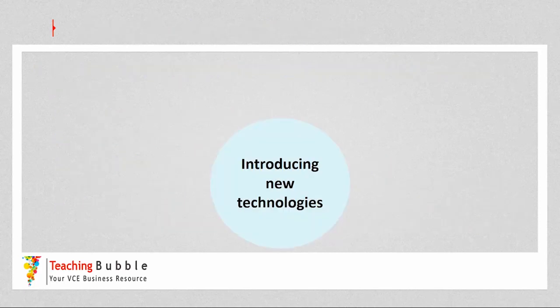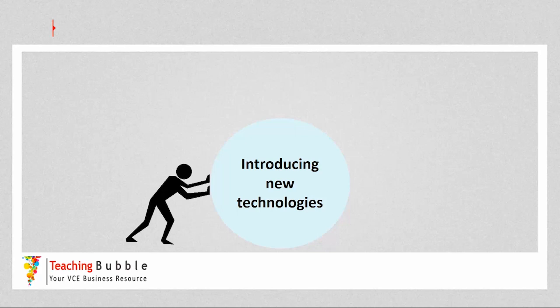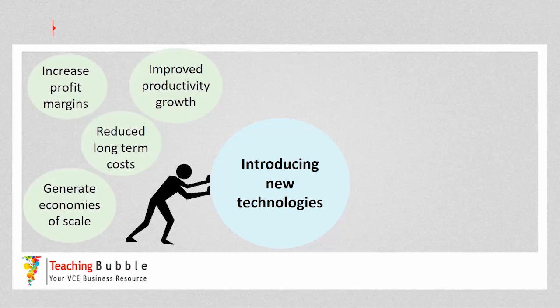Let's look at an example. We've got a business that's looking to introduce new technologies — that could be a new automated production line, new communication software, or even artificial intelligence such as a virtual assistant. When conducting a force field analysis, the manager would firstly identify the driving forces — those helping support the change. It could be that technologies improve productivity growth, reduce long-term costs leading to increased profit margins, or allow the business to achieve economies of scale.